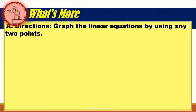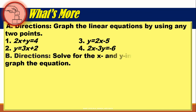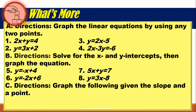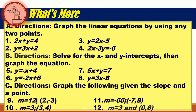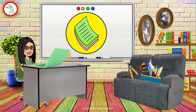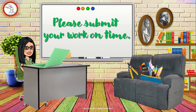Let's do What's More. Part A: graph the linear equations by using any two points — four items. Part B: solve for the x and y-intercepts, then graph the equation — four items. Part C: graph the following given the slope and a point — four items. Use a separate sheet of paper and submit your work on time.